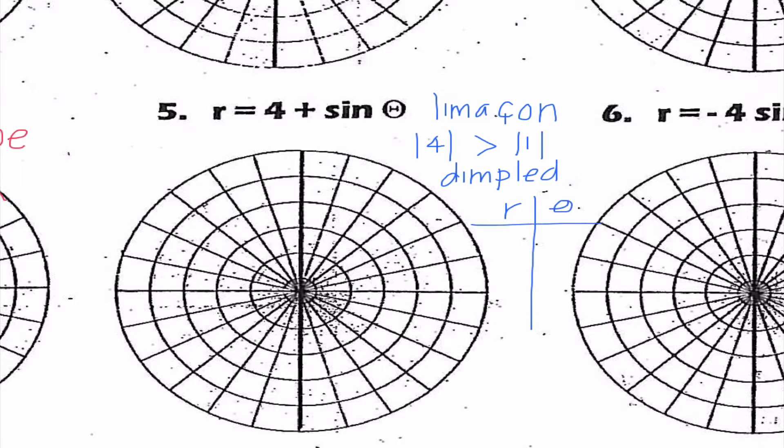So I'm going to make the r theta chart, and I know we need to do zero, 90, 180, and 270, because we're doing all of our quadrantals. So I have four plus sine of zero. Sine of zero is zero, so I get four. So one, two, three, four. I'm going to plot as we go here. If I put in 90, sine of 90 is one, so four plus one is five. So that gives me an ordered pair of five, 90 degrees. Sine of 180 is zero, so I get four again. So that would give me right there. And then when I put in 270, that is negative one, so four minus one is three. And then we're going to go ahead and sketch our dimpled.